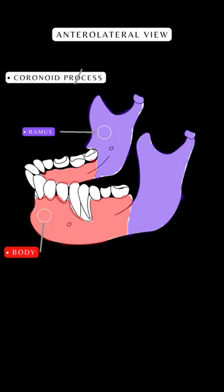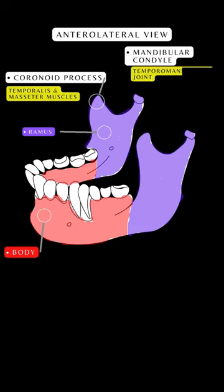On the ramus, the coronoid process is the site of insertion for the temporalis and masseter muscles. Another important feature is the mandibular condyle, which articulates with the mandibular fossa on the inferior aspect of the temporal bone, to form the temporomandibular joint.